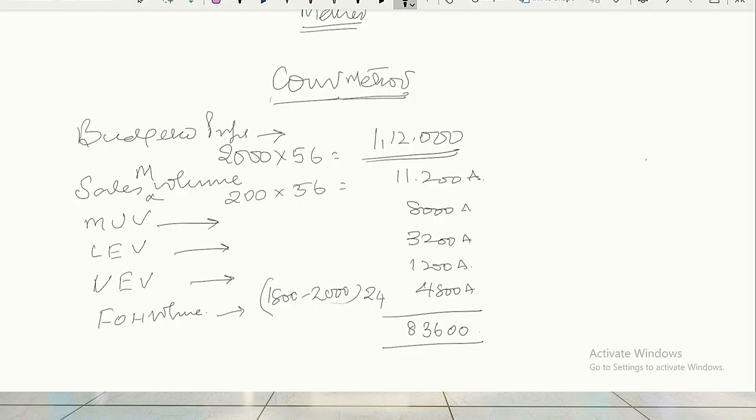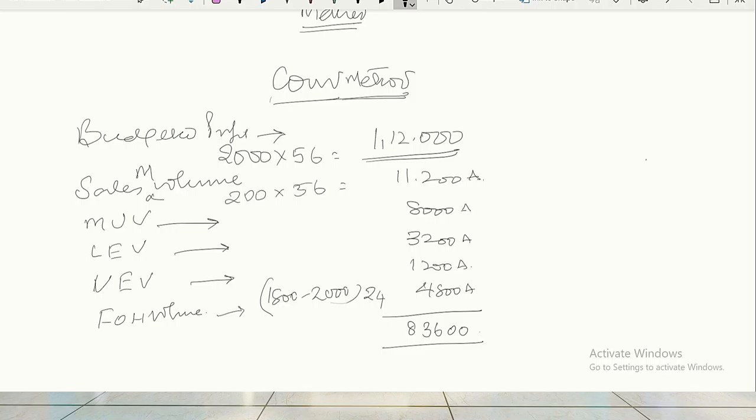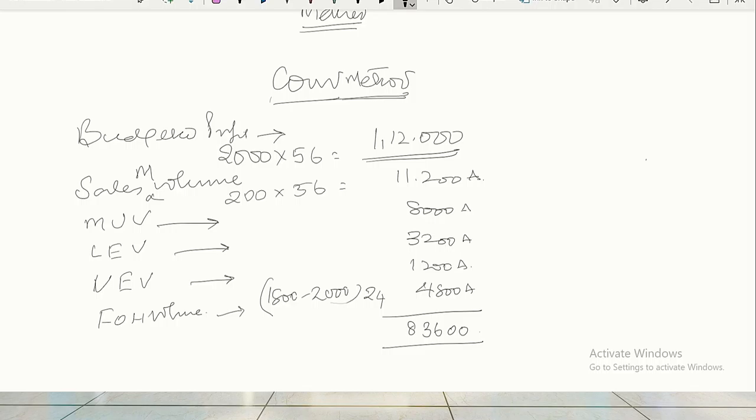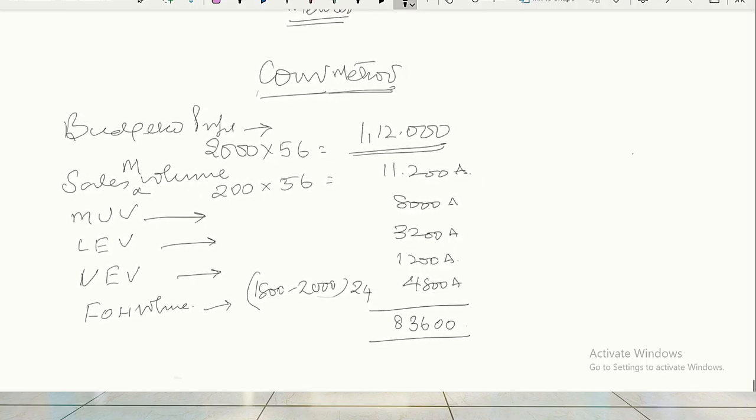Then the next question is, labor is scarce, we have done. Variable overhead, the material is scarce, we have done. And no scarcity, we have done. So three columns you have to present. But you remember only one thing. The profit, 83,600 will be there. So even you do any mistake, you know how to tackle it. That is very, very important. So we are now going to the other method. This is, raw material is scarce.